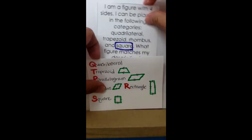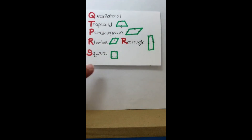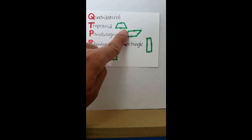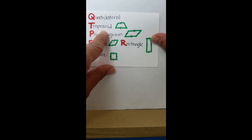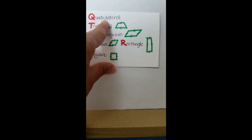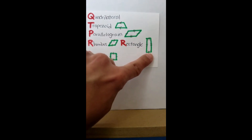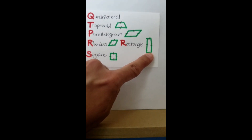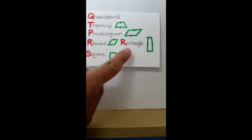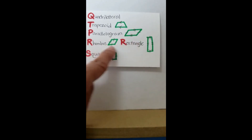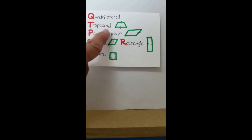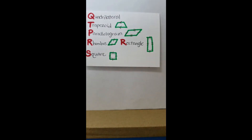Remember: if they give you a trapezoid and ask for all possible names, write trapezoid and quadrilateral. If they give you a rectangle, write rectangle, parallelogram, trapezoid, and quadrilateral — not rhombus, since rhombus is not above rectangle. Use the trick: Queen Terry Picks Red Raspberries Saturday. Hope this helps — see you in classwork today!